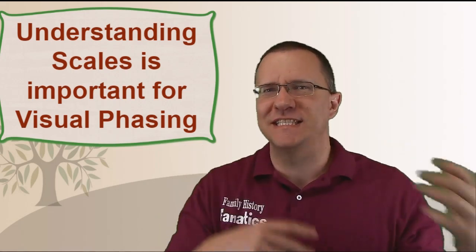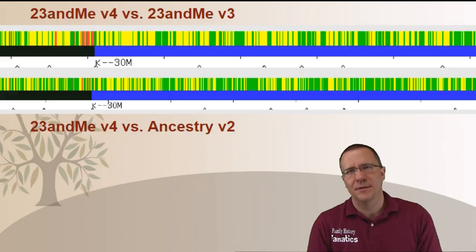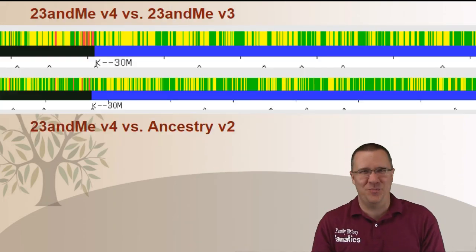Understanding these different scales of how we measure DNA is really important when we're looking at visual phasing. Visual phasing the idea is that we line up these graphics and we can start to see where common recombination points are between siblings. But sometimes we may run into a little problem where things don't line up exactly.